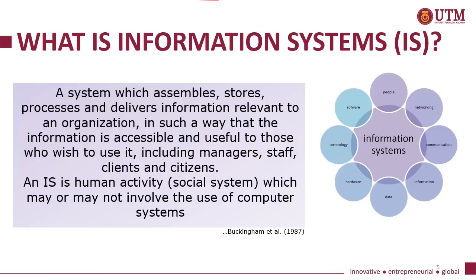What is an information system? According to Buckingham et al. (1987), an information system is a system which assembles, stores, processes and delivers information relevant to an organization in such a way that the information is accessible and useful to those who wish to use it, including managers, staff, clients and citizens. An IS is a human activity social system, which may or may not involve the use of computer systems.